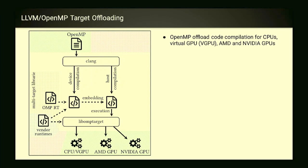Clang splits input into device and host compilation. On the device side, the runtime is target-dependent — different intrinsics for NVPTX vs AMD GCN. Vendor runtimes provide hooks into math functions. We pipe those in and embed the result into the host object file, then execute with the target on virtual GPU, AMD, or NVIDIA. This is the current state of upstream LLVM OpenMP offload. We're also working on Intel and Apple GPUs.